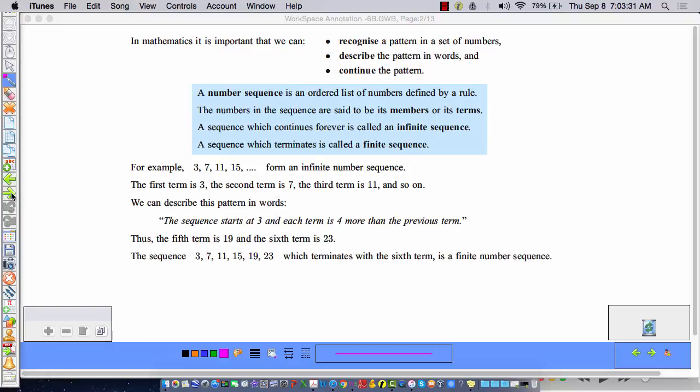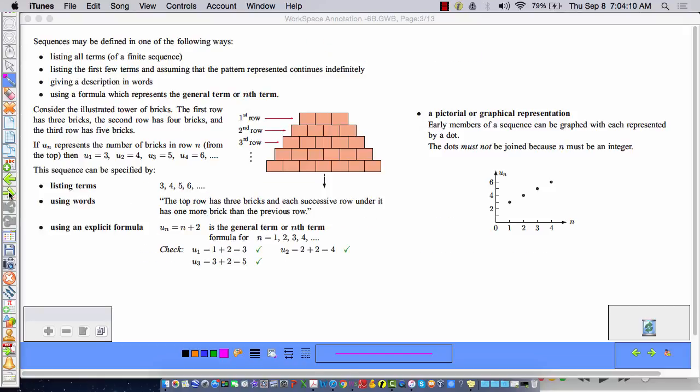A number sequence is an ordered list of numbers defined by a rule. This is important stuff, this vocabulary. It's boring writing, but we need to know it. The numbers in the sequence are members of the sequence, or terms. If a sequence goes forever, it's infinite. If it stops, it is finite. So this sequence here is infinite because it continues forever. But this sequence here is finite because it terminates at 23. There's no dot, dot, dot to indicate that it's going forever.